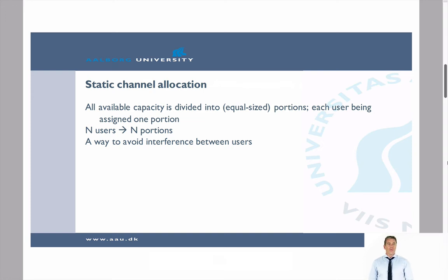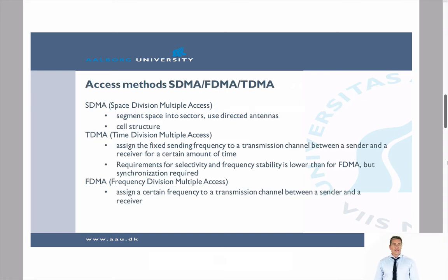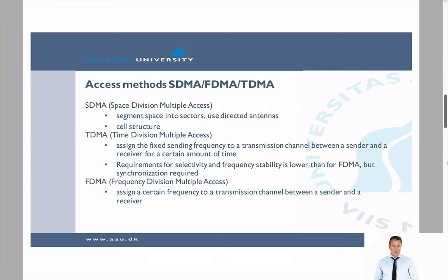There are different ways of doing this. One is SDMA — Space Division Multiple Access — where we are dividing our capacity based on space. That could mean a cell structure in a larger network, dividing the space into sectors where each sector has a different antenna. This is based on a cell structure, basically splitting it up into cells.